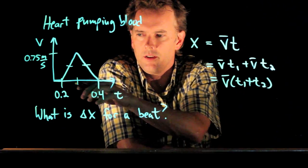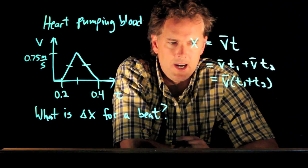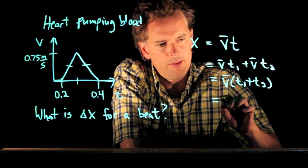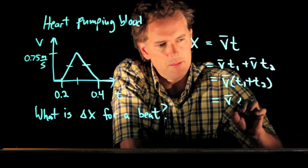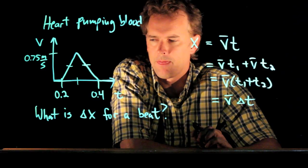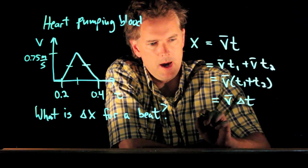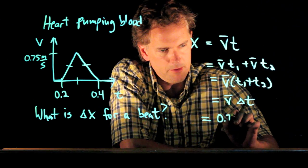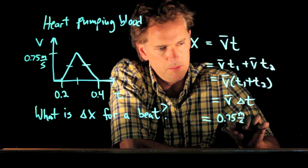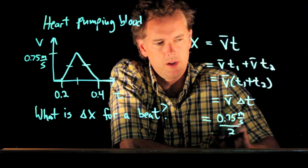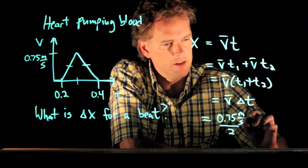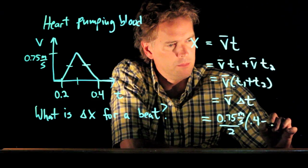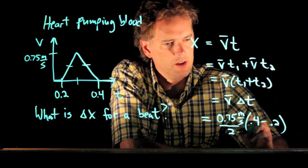t1 plus t2 is just how much total time has elapsed. And so in this case, we have v bar times delta t. And now we know all those numbers. v bar is 0.75 meters per second over two. What's delta t? It is 0.4 seconds minus 0.2 seconds.